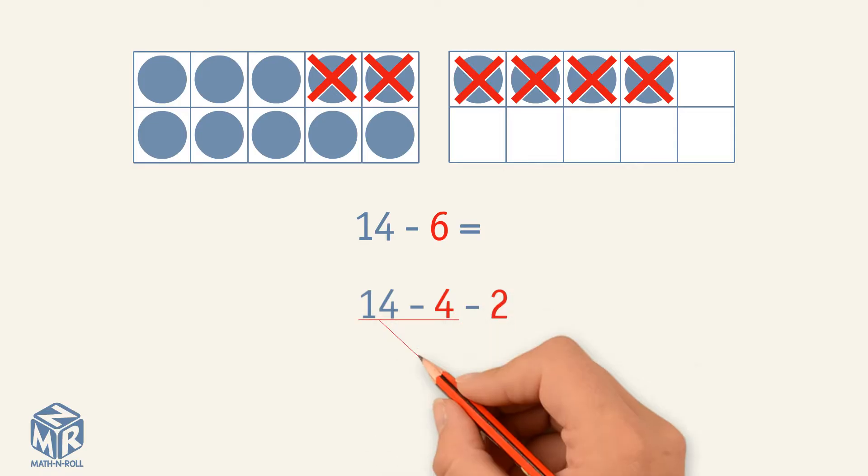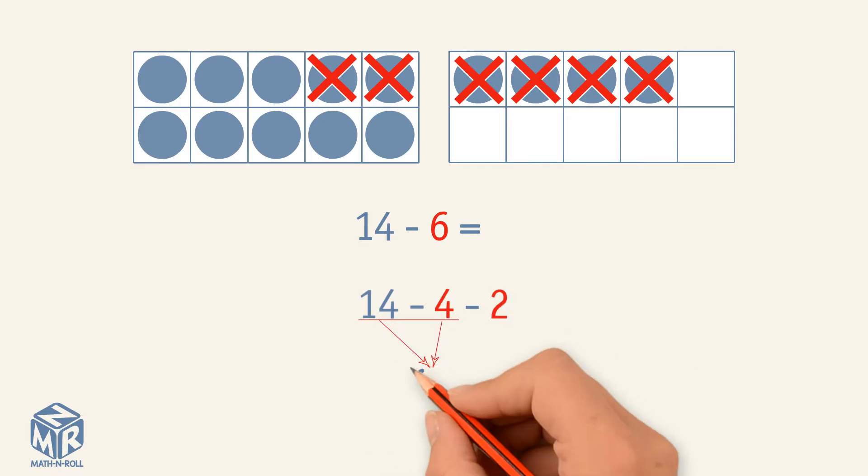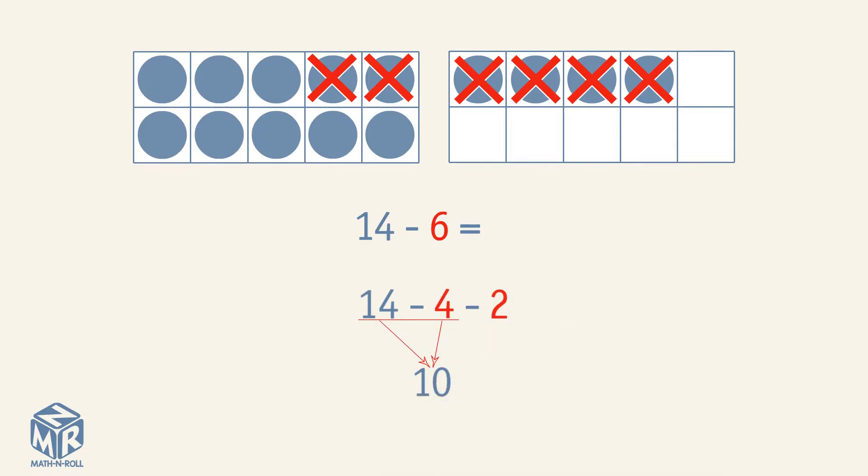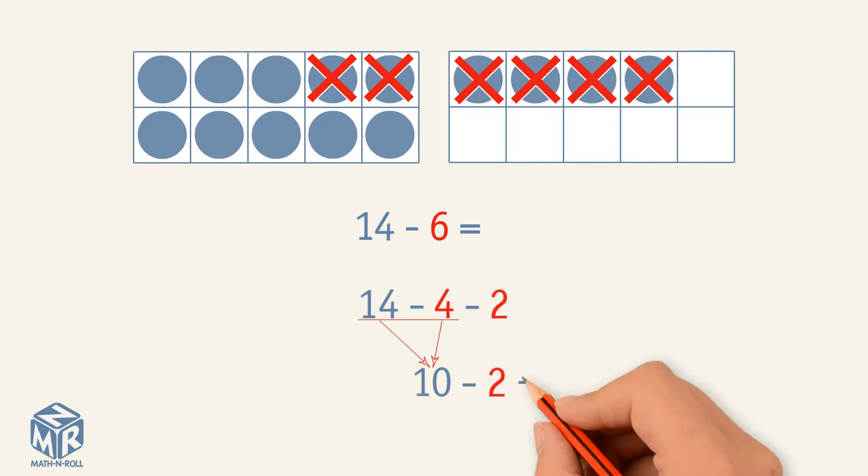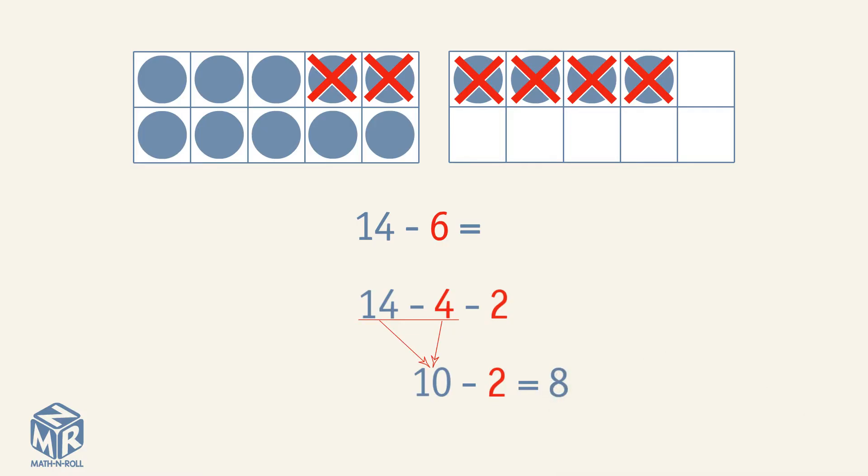14 minus 4 equals 10. 10 minus 2 equals 8. So 14 minus 6 equals 8.